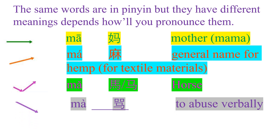The next one is the falling tone: MA. This MA means to abuse verbally or to curse. So do not interchange the tones, because if you interchange them, the meaning already changes. For example, if you are referring to your mama and you want to call your mother, do not say MA — because that is referring to a horse. Just say MA, which means mother. Do not say MA, because then you are not calling your mother — instead you are calling the horse.